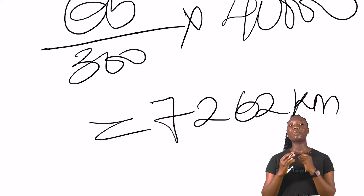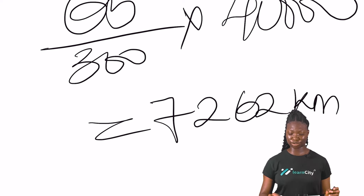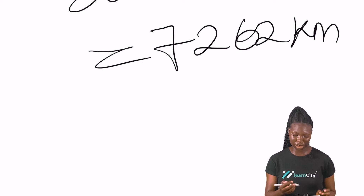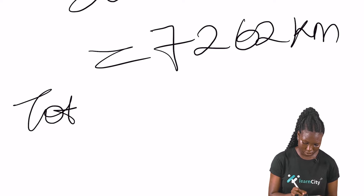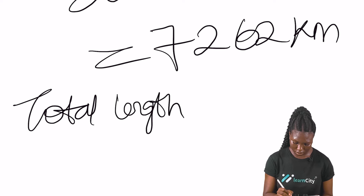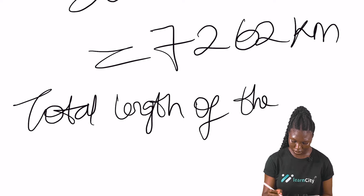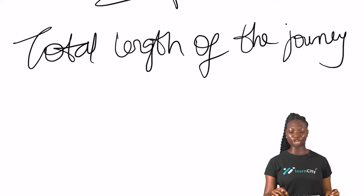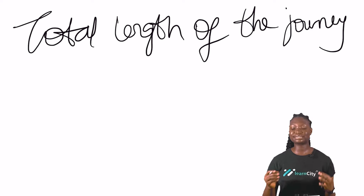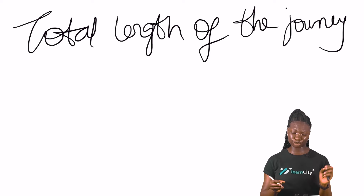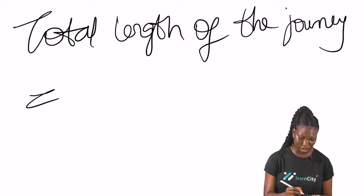Using the calculator, the distance from Q to R is 7262 kilometers. The total length of the journey is therefore 1416 plus 7262 kilometers.